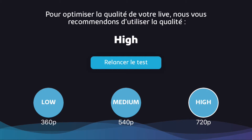Because we have a good connection today, the app is recommending high quality streaming. This will be the case if you're on Wi-Fi or have a good 4G connection. If you don't have good streaming conditions, the app will automatically recommend 540p or 360p quality. The quality will be lower than HD but it won't lag — if you try to use high quality in poor conditions, you may experience lagging.